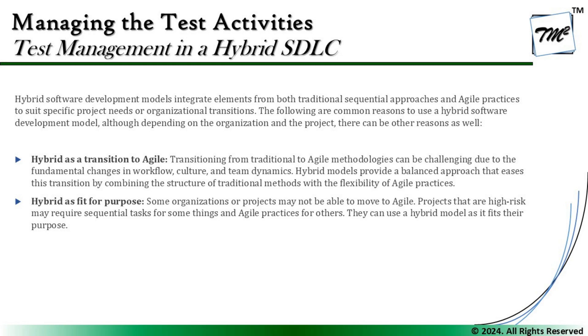Transitioning from traditional to agile methodology can be challenging due to fundamental changes in workflow, culture, and team dynamics. Hybrid models provide a balanced approach that eases this transition by combining the structure of traditional methods with the flexibility of agile practices. On the other hand, hybrid as a fit for purpose means some organizational projects may not be able to move to agile completely. Projects at high risk may require sequential tasks for some things and agile practices for others, so they use a hybrid model as it fits their purpose.